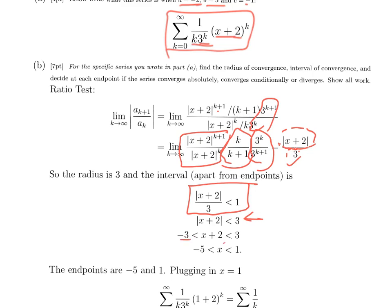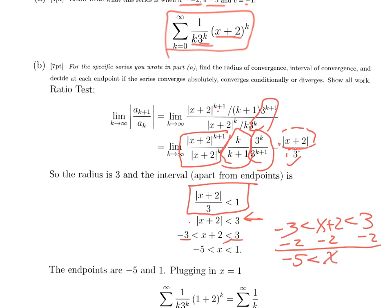A lot of people had trouble with finding the interval, and it's really worth emphasizing. Most people wrote the ratio test result fine, but then subtracting 2 from all three sides was really hard. So write it out slowly: minus 3 is less than x plus 2, which is less than 3. Then subtracting 2 from all three sides gives minus 5, x, and 1. Or you can say all the points a distance 3 from negative 2 go plus 3 up to 1, and minus 3 down to minus 5.